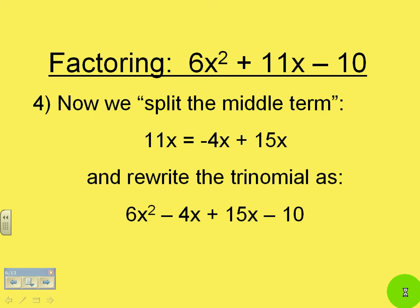So here now we split the middle term. We're going to rewrite 11x as minus 4x plus 15x and we rewrite the trinomial therefore as 6x squared minus 4x plus 15x minus 10.